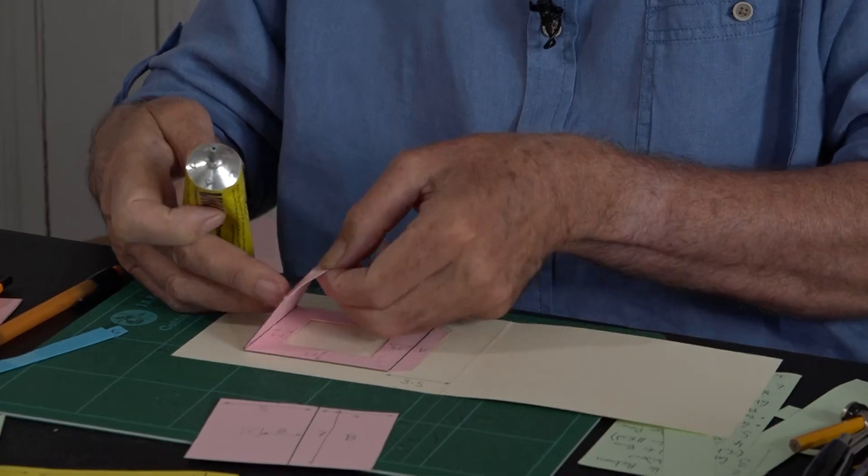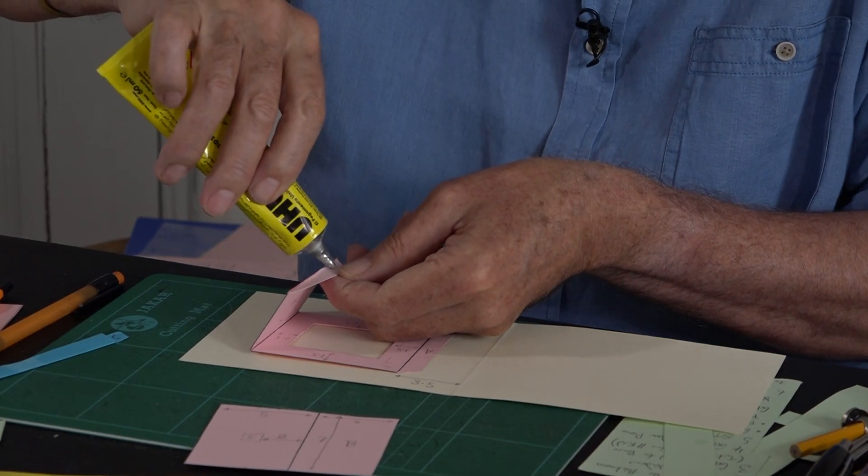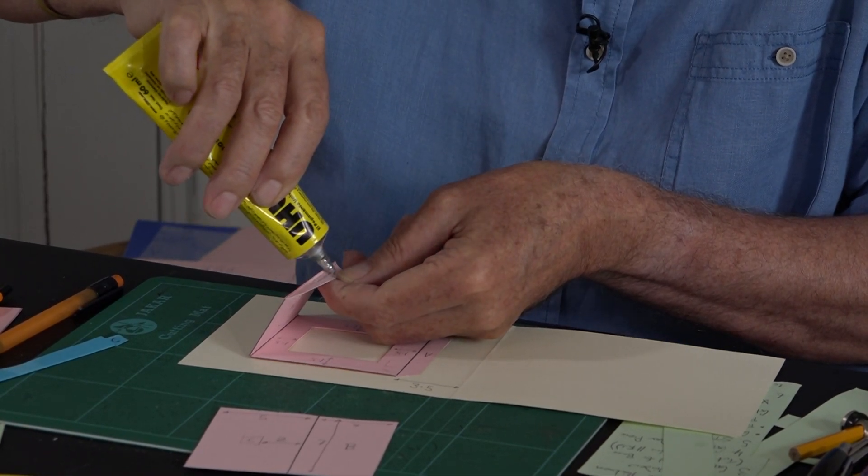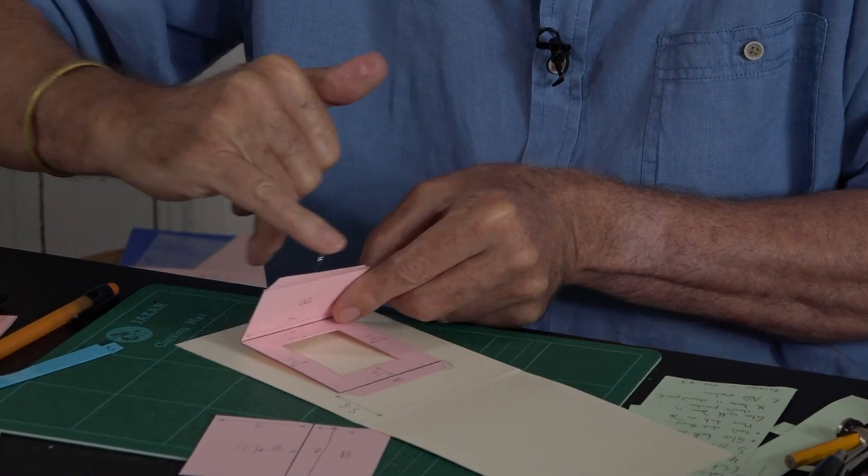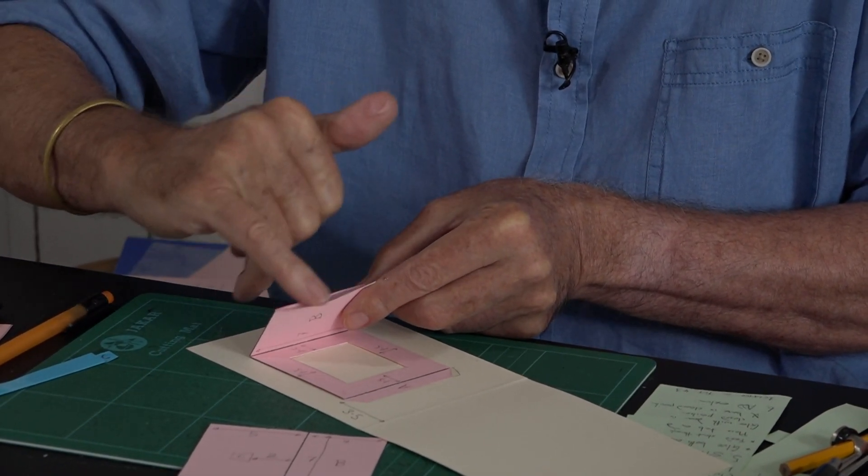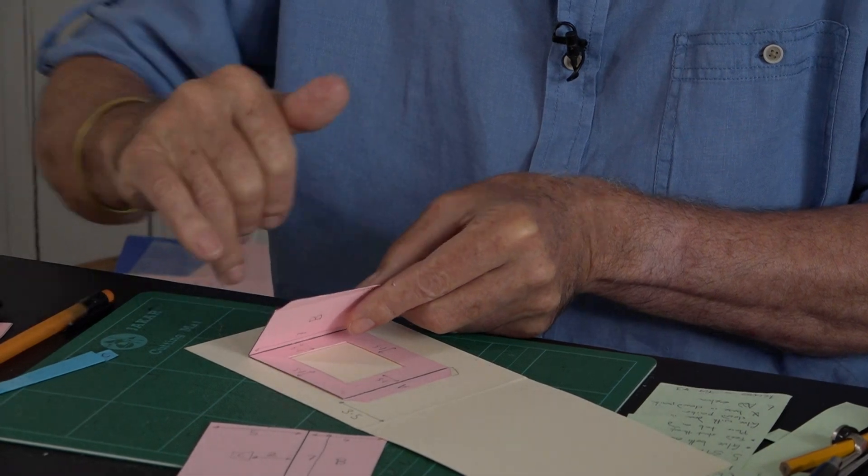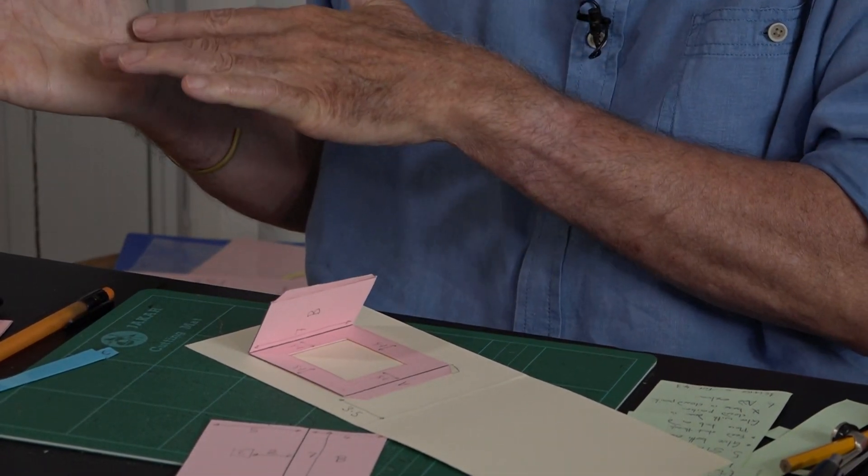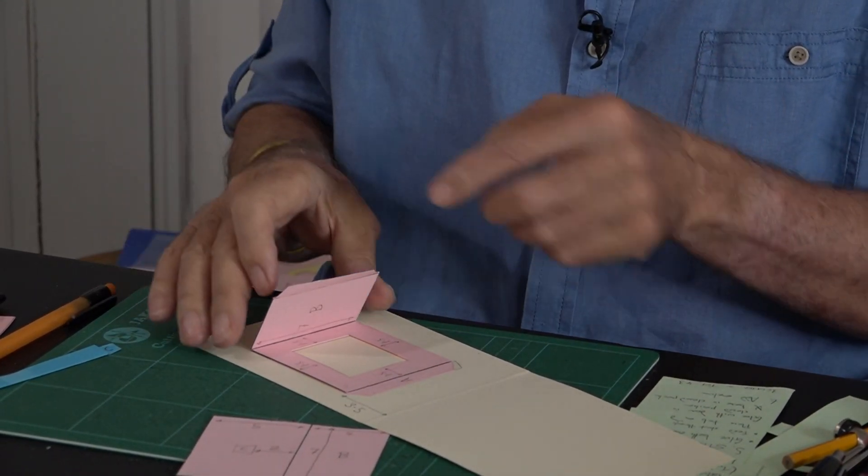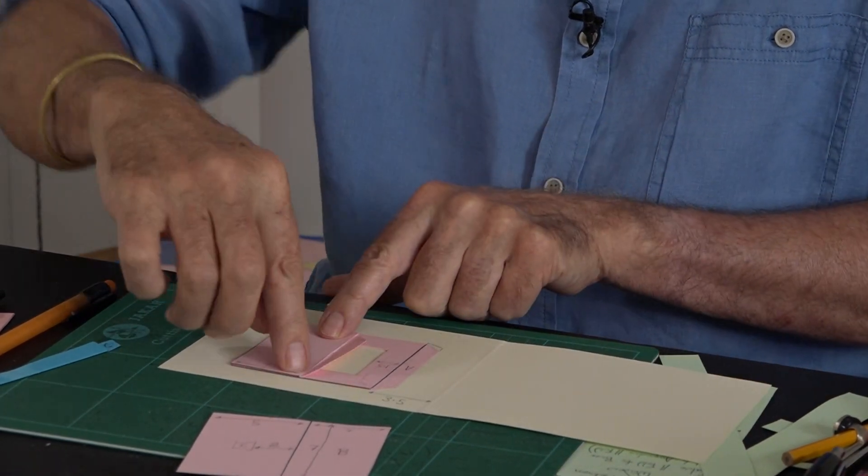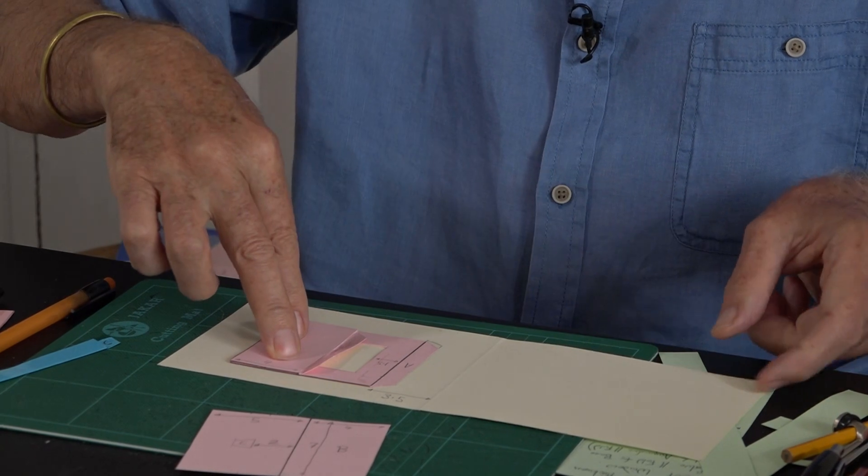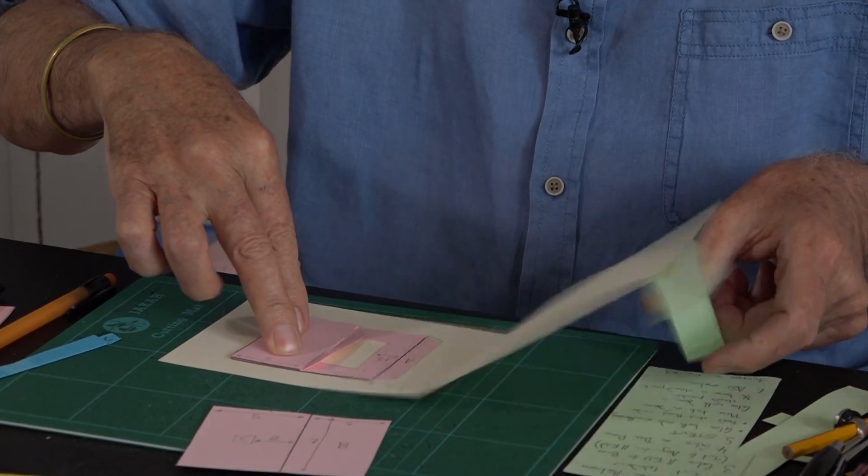It actually doesn't matter which way the flap goes—it'll either be sticking out of the whole construction or sticking in. The important thing is where the crease goes. You get where the crease is going to go by folding this into its shut position and then shutting this.